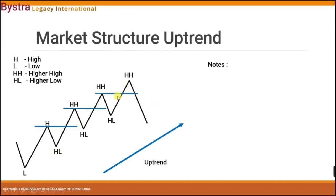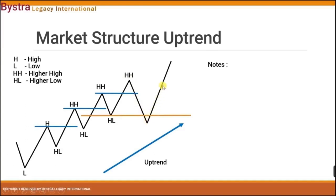Price has continued to create higher high, higher low, higher high, higher low, and higher high — it keeps breaking the previous high. Now, as you can see in this case, the price has come down and broke this higher low structure. So once it broke, and the price continues to go up and broke this higher high structure — when this kind of case happens, this higher high and this higher low is invalid.